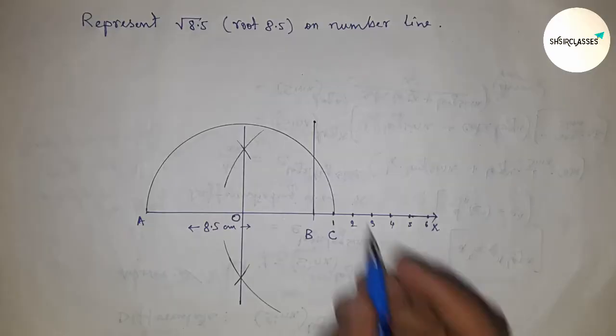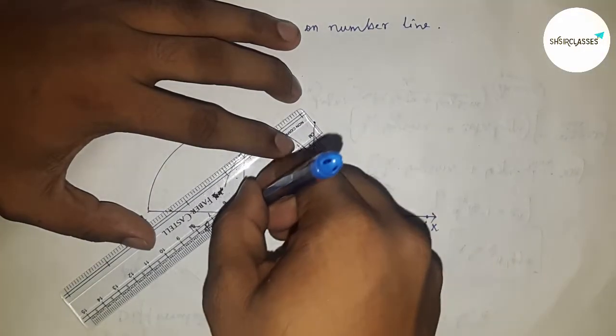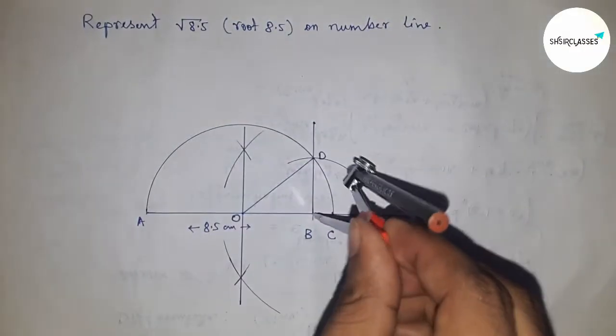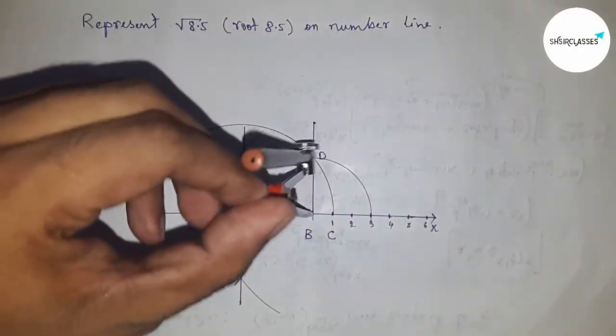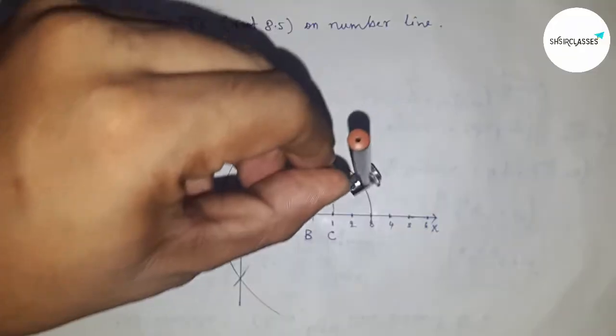The 90-degree angle cuts the semicircle at point D. Join this for the radius. Next, take the length BD and draw an arc which cuts the number line at a point.